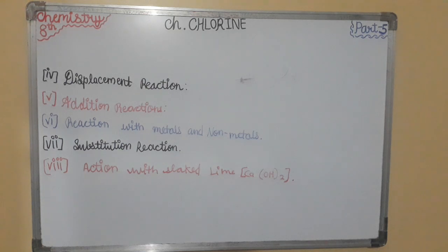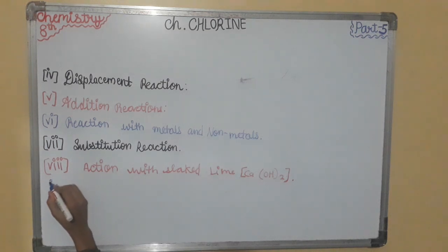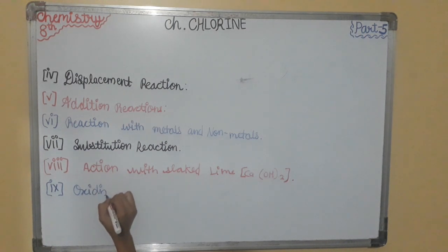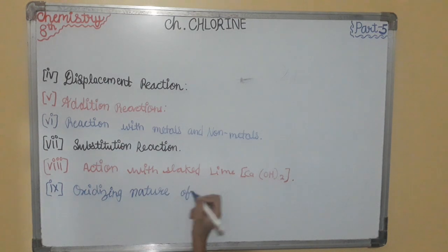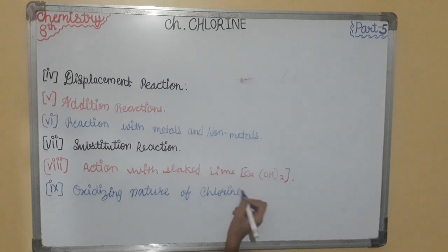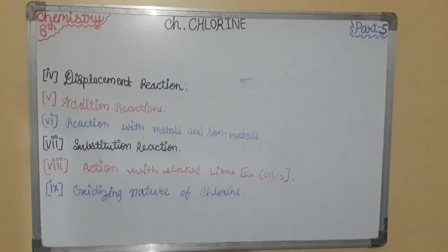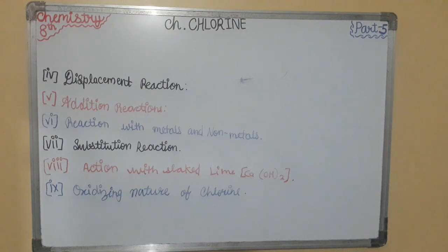The 9th property is the Oxidizing Nature of Chlorine. Oxidation is the loss of electrons, and the chemical agent which gains electrons is called an oxidizing agent. Oxidation is also the removal of hydrogen, and the chemical agent which removes hydrogen is called an oxidizing agent. Oxidation is also the gaining of oxygen or electropositive elements like Na, and the chemical agent which helps in doing so is called an oxidizing agent. Chlorine acts as a good oxidizing agent on account of the following reasons.